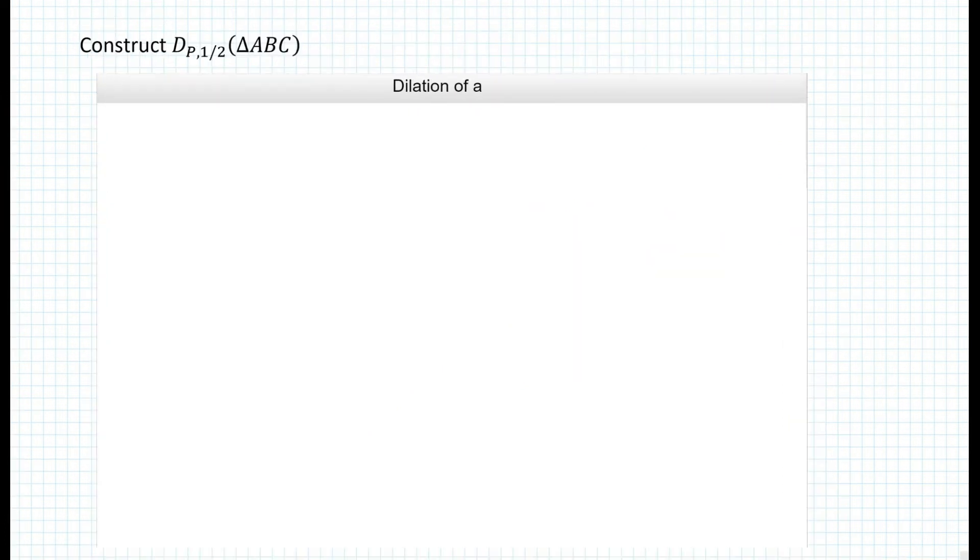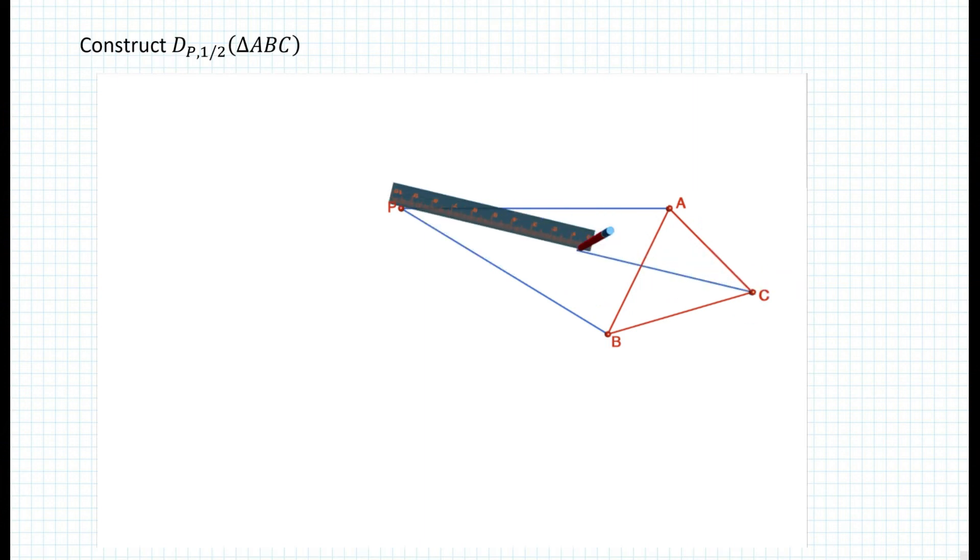So here's a demonstration on how to construct a dilation of a geometric figure. First, let's say you draw a triangle A, B and C. You connect the points to form a triangle. And let's say we want to have a scale factor of one half and point B is the center of dilation. So we place a point P somewhere. And now what we want to do is draw a line from each vertices of the polygon to point P. And again, this works for any polygon, not just a triangle.